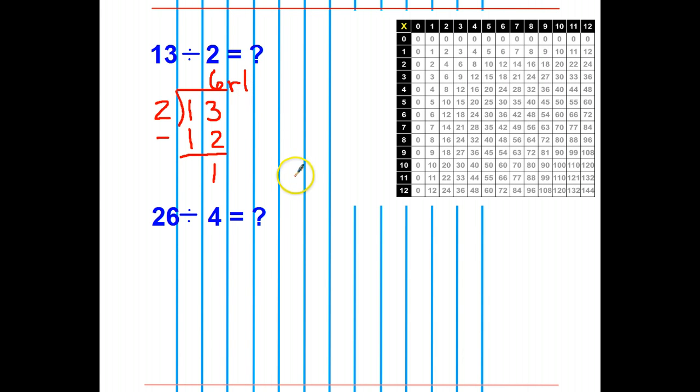6 remainder 1 is my solution. Let's check to see if my solution is right. 6 times 2 is 12. 12 plus my remainder is 13. 13, I am in business. 6 remainder 1 is the correct solution.